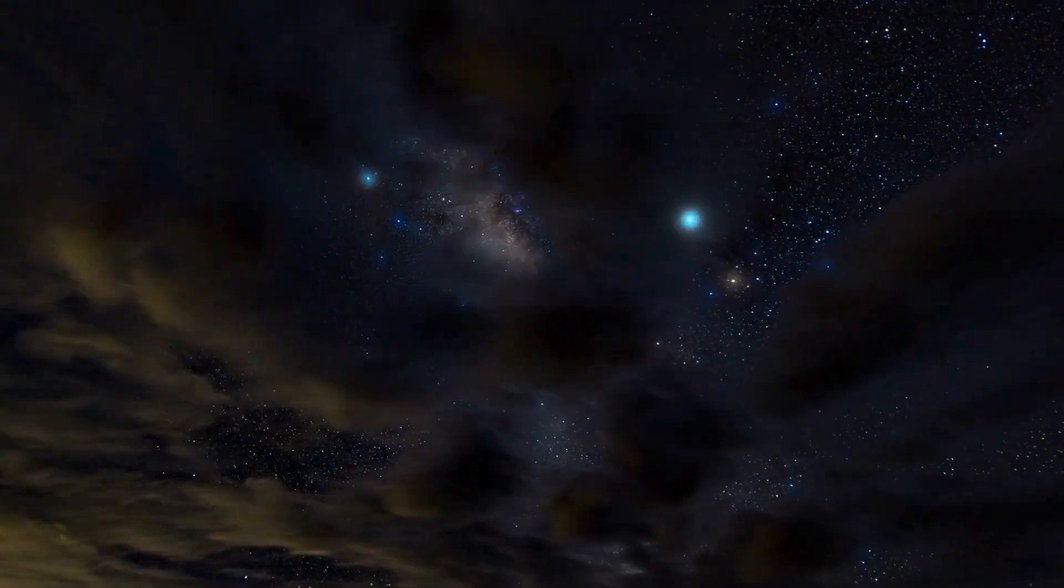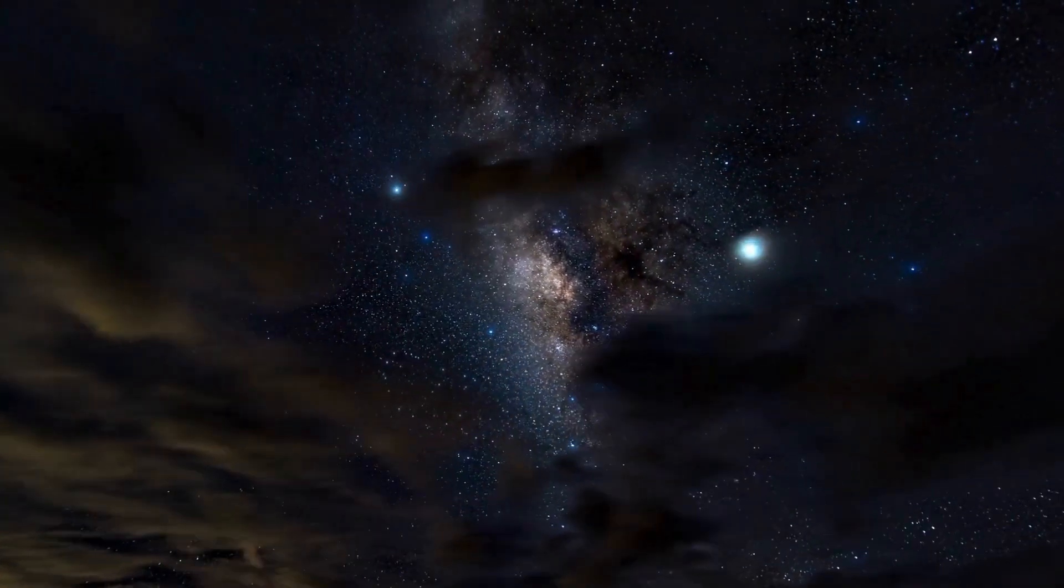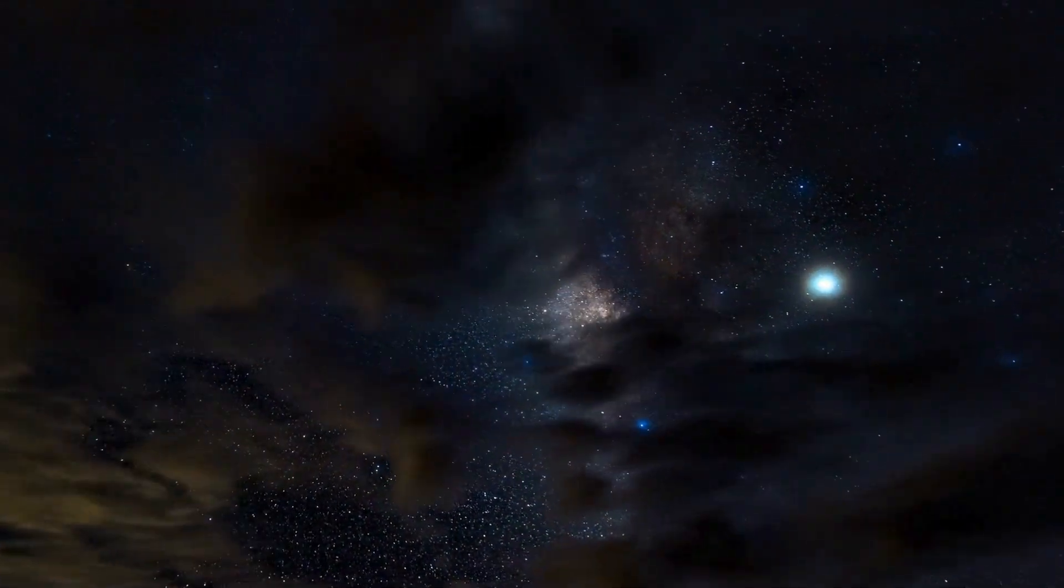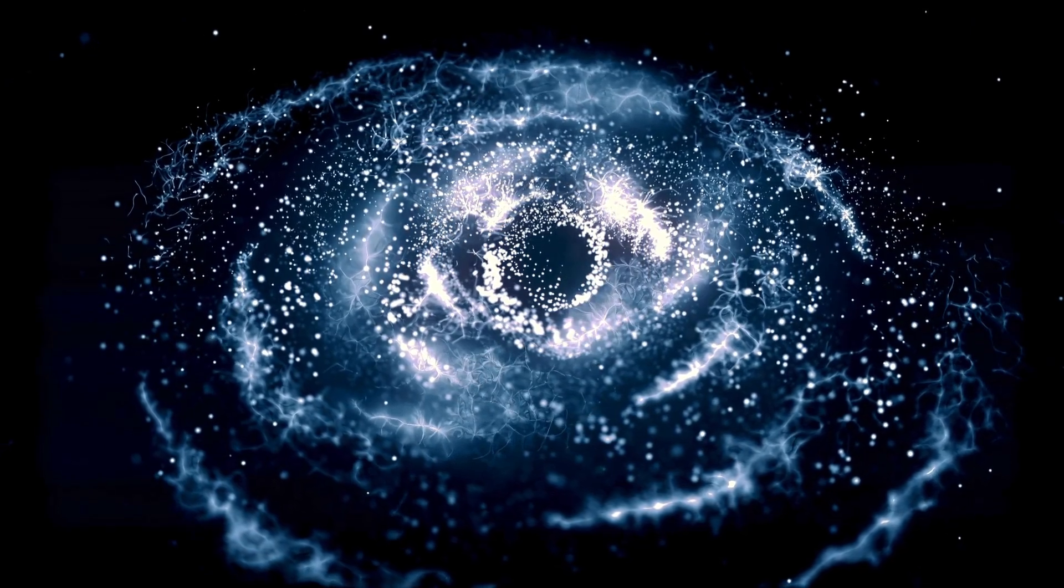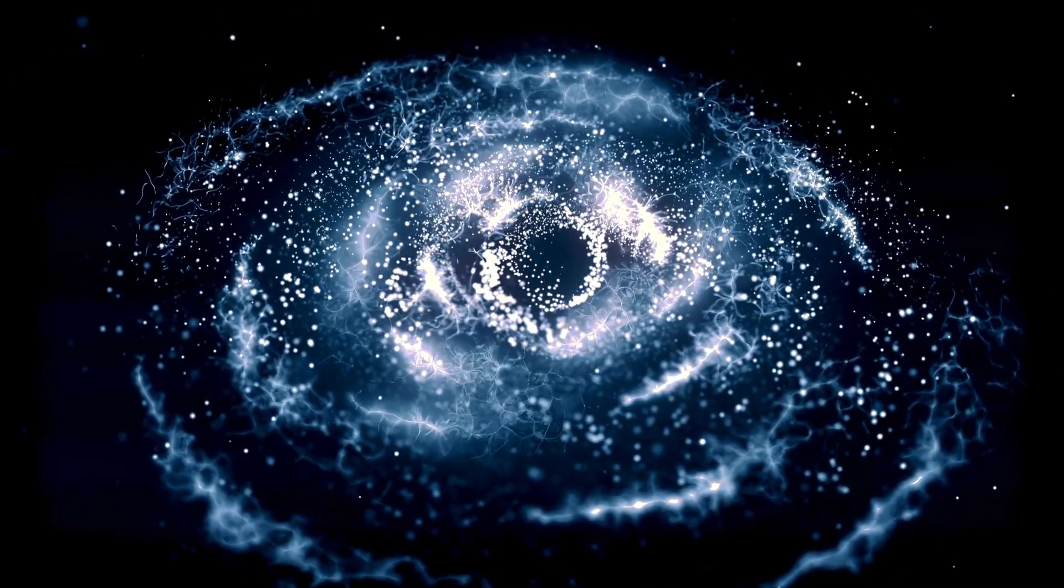One of these galaxies was Andromeda, also known as M31. Its observation goes back centuries, with records dating to the 10th century Persian astronomer Abdi Alraman al-Sufi, who described it as a small cloud visible to the naked eye.